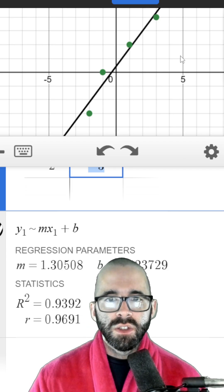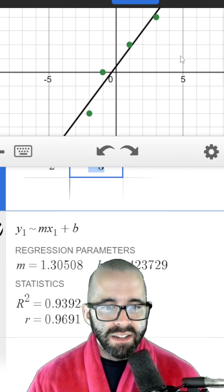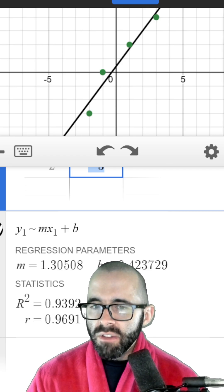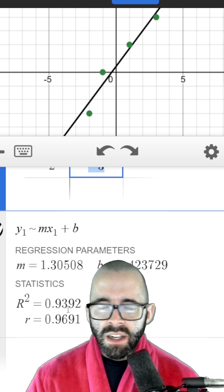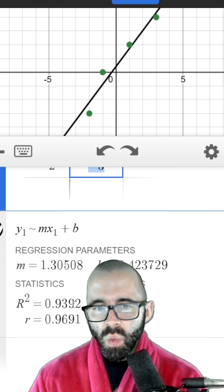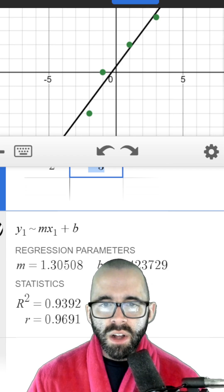This regression line is just the line that fits the data the best. It's going to give you an R squared value, which shows you how good it is. That can be as close to one as possible. The closer to one, the better it is.